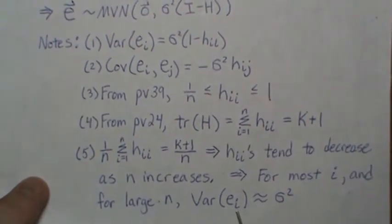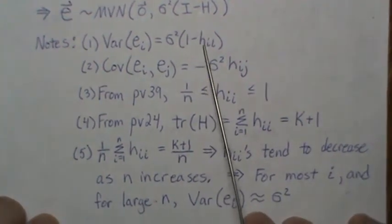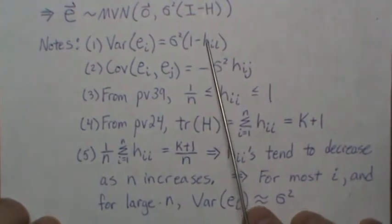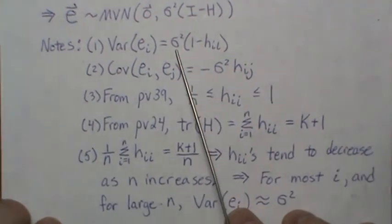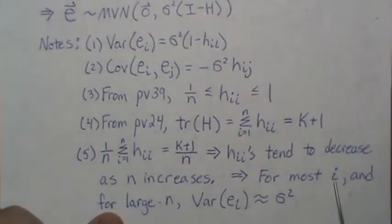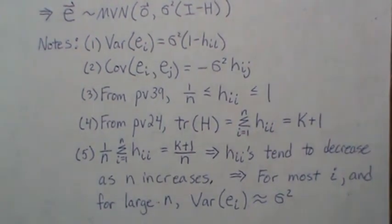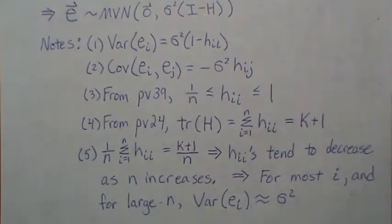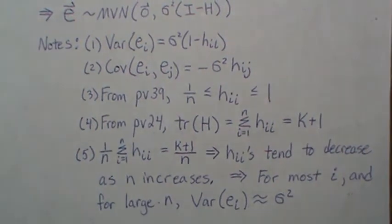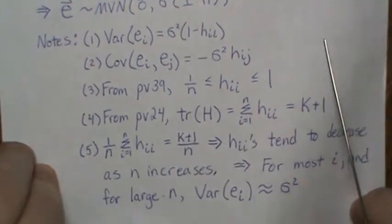So that implies that the variance of the i-th component is roughly sigma squared. If this tends to go to zero, then one minus something close to zero is roughly one, and one times sigma squared is sigma squared. Now it's for most i, and that's because you can create situations where if you have a data point that's so far removed from the center of the data, then that diagonal element stays pretty large compared to the others.